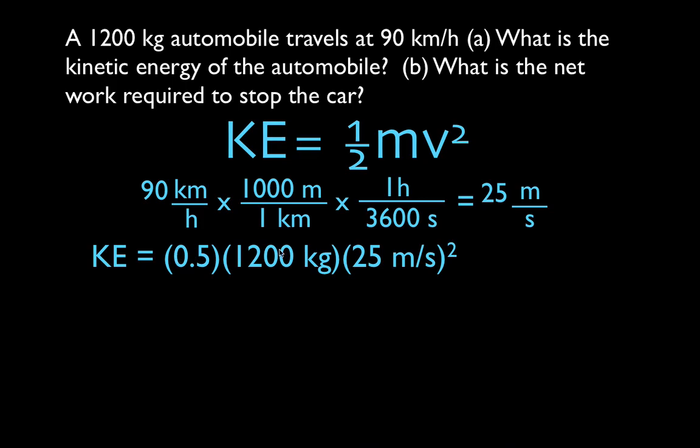This is all multiplication, so it doesn't matter what order we do this for our order of operations. And we just do that. We get 375,000 joules. That is the kinetic energy of a 1,200 kilogram car going 90 kilometers per hour or 25 meters per second.